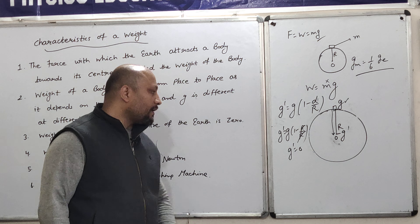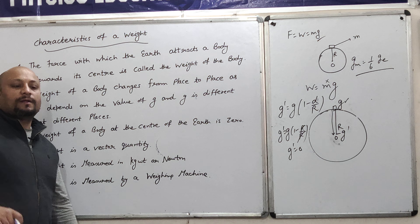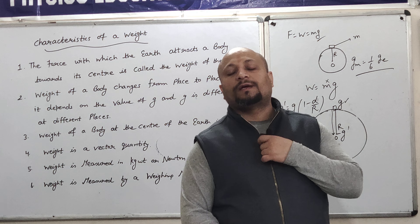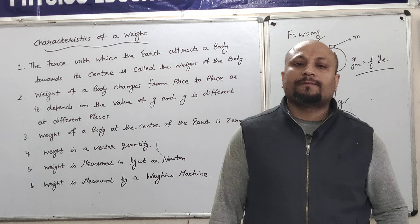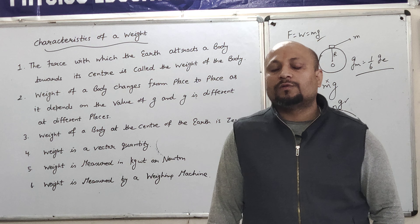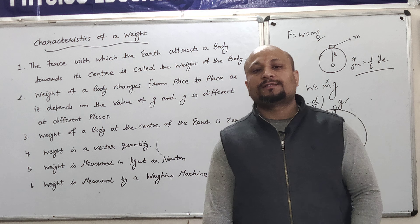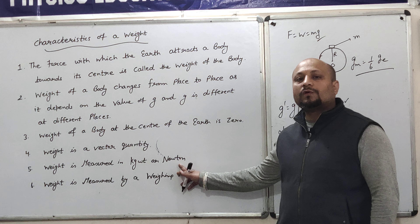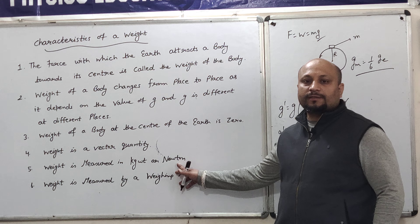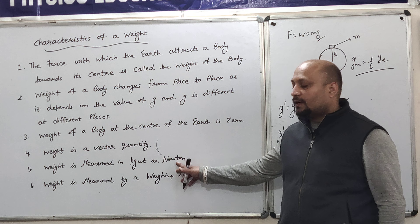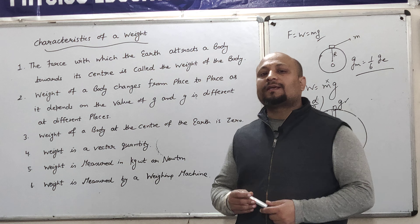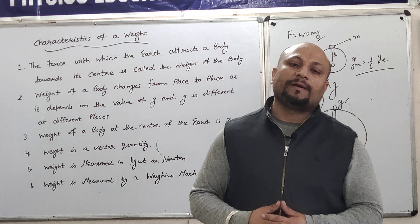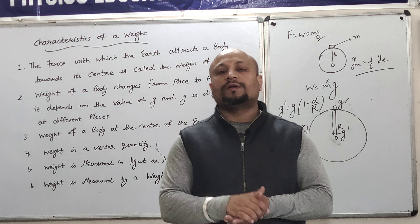Next property: weight is a vector quantity. As I told you, mass is a scalar quantity, but weight is a vector quantity, because weight has both magnitude and direction. Weight is measured in Newtons, because weight is the force exerted by the earth on the object placed on its surface. Weight is measured using a weighing machine — when you stand on a weighing machine, it gives a reading equivalent to your weight.